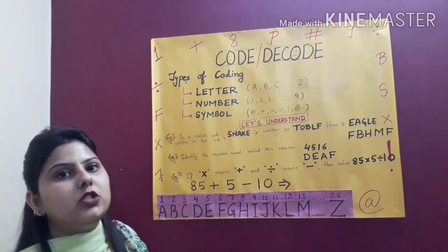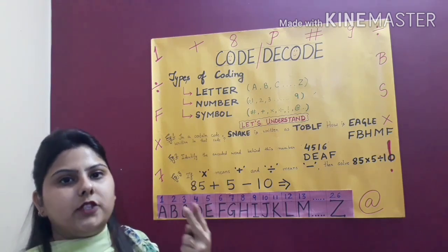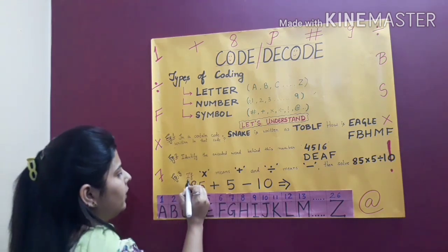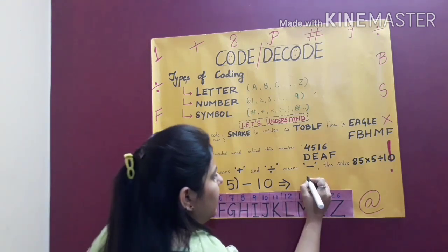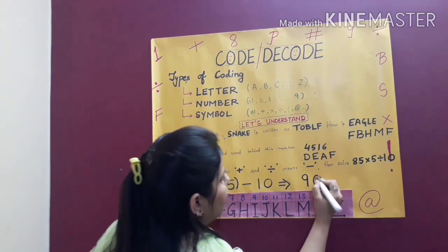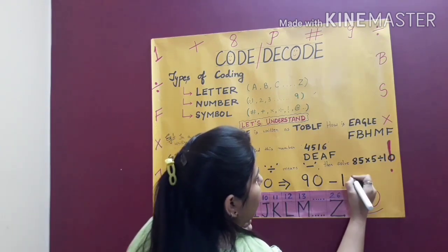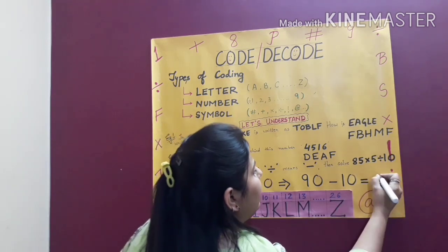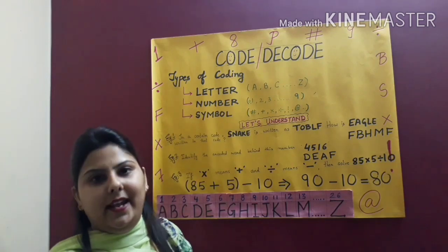Now applying the rules of mathematics, always remember that we first add and then after that we subtract. So adding 85 plus 5, what will you get? You will get 90. Very good. Then what do you have? You are minus 10. Now 90 minus 10 gives you what? 90 minus 10 gives me 80. So my answer is 80.